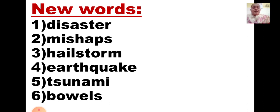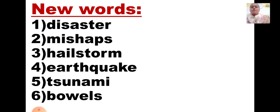Second one, M-I-S-H-A-P-S, mishaps. Mishaps are some small events which do not cause great damage — they are a smaller accident. For example, a tree falls on the road but nobody is harmed. So that is a mishap, a small accident which occurs.